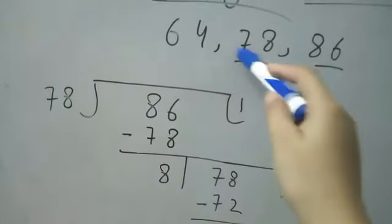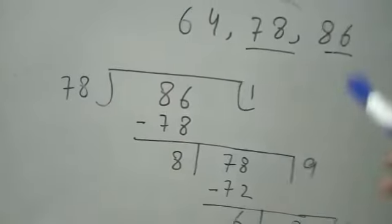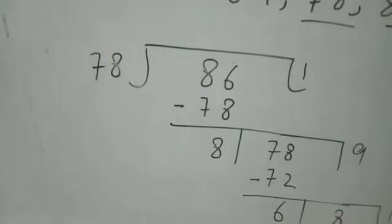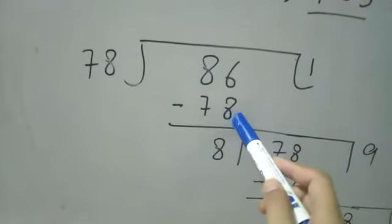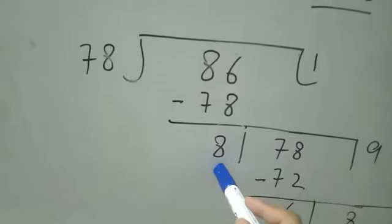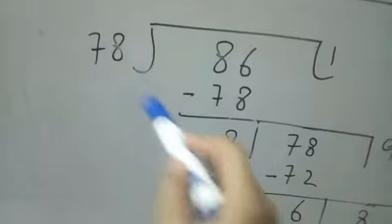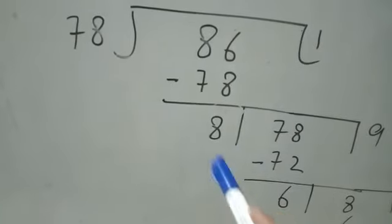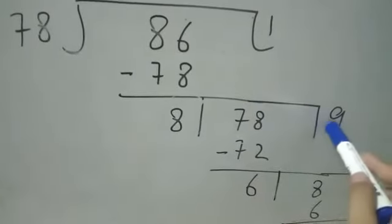We can take the HCF of 64 and 86, or 78 and 86 — it's up to you. The remainder from one step becomes the divisor of the previous step. 78 was the divisor before; now the new remainder becomes the divisor. So 8 is placed outside and 78 goes inside: 8 nines are 72.